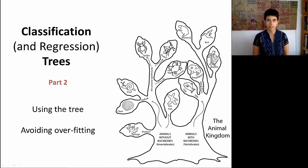In the previous session on classification trees, we talked about how to grow a tree. Now let's talk about how we can use the tree for several objectives, and then we'll talk about the critical issue of avoiding overfitting the training data.